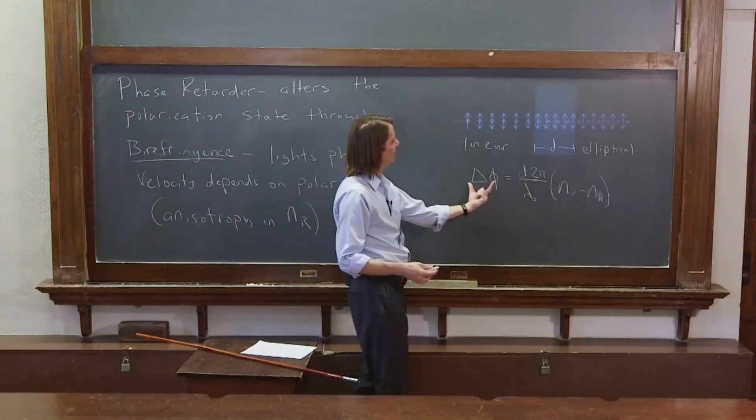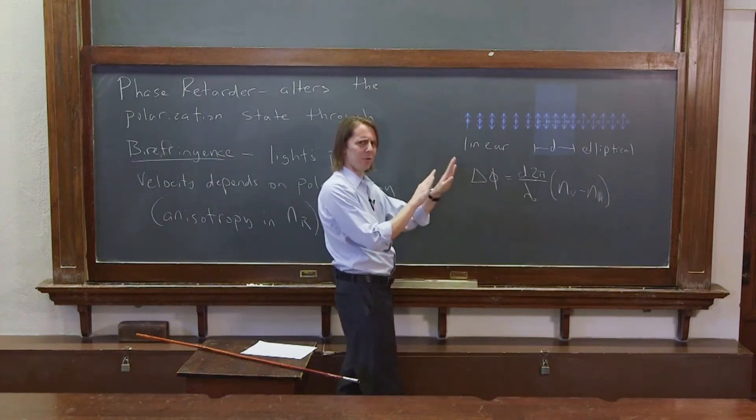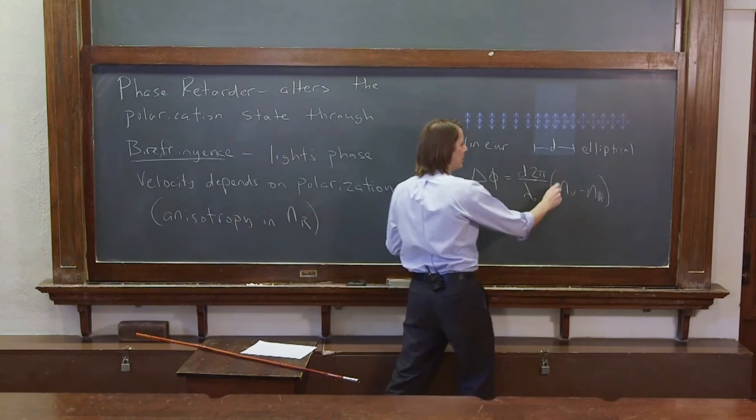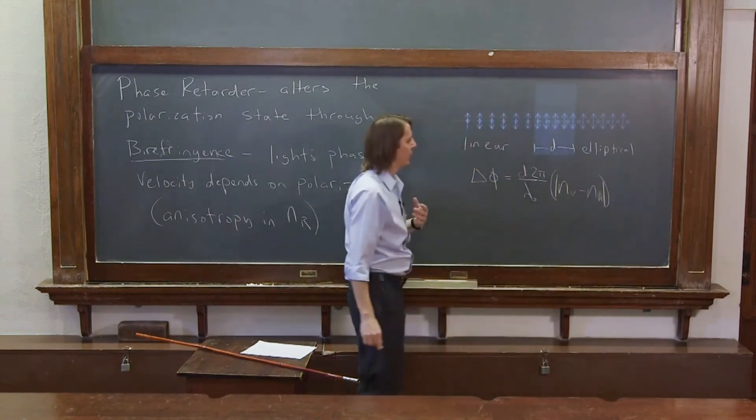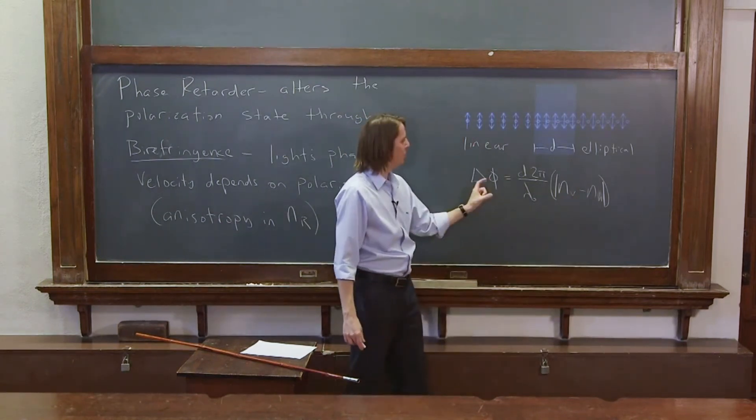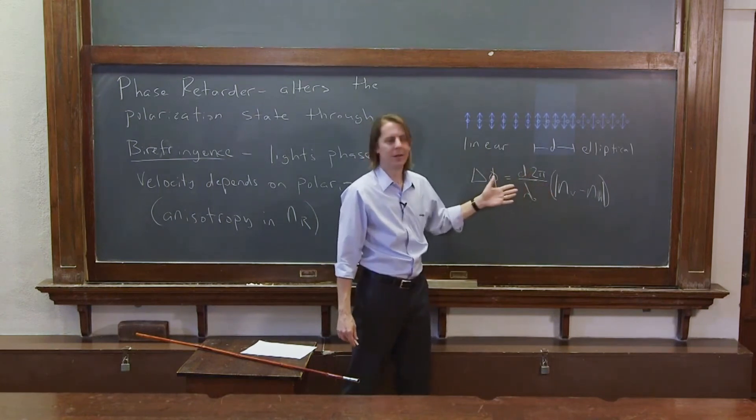It's a little ambiguous though, because I said Δφ, the phase difference. I didn't say if it was vertical minus horizontal or horizontal minus vertical. So often when you see it written like this in a book, they'll put error bars, they'll put an absolute value bar there. That way it doesn't really matter which way you subtract them, and it doesn't really matter which way you're defining Δφ. It actually doesn't matter.